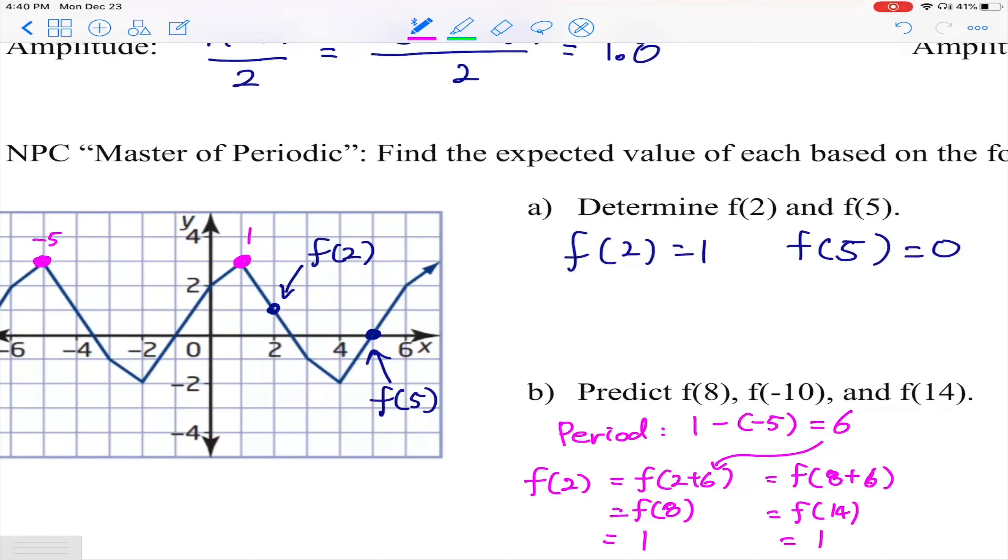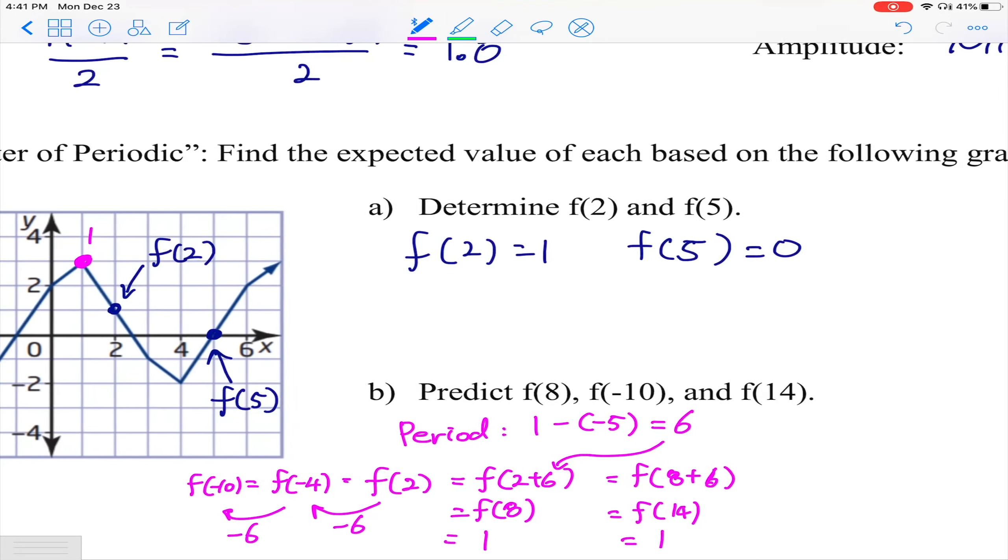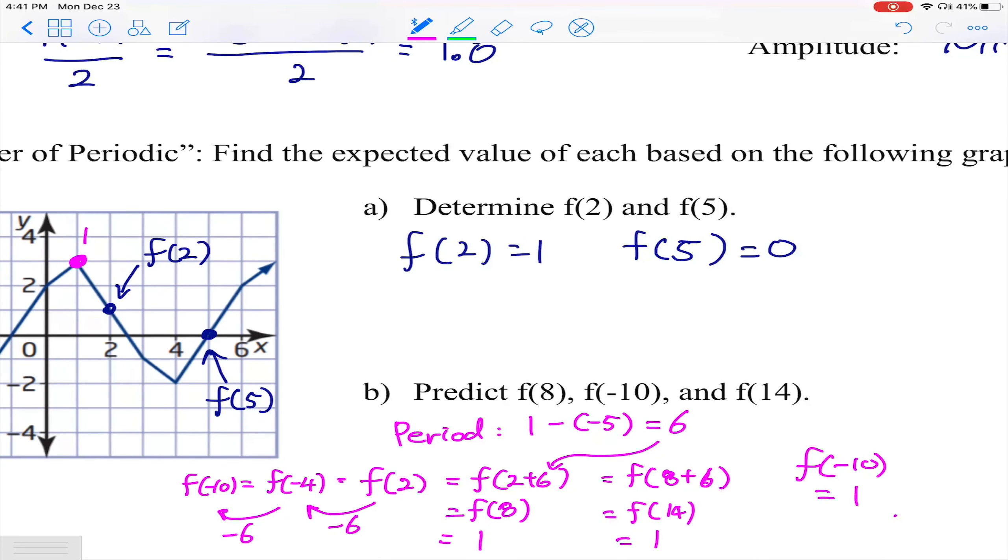Since we can go towards the right side, we can also go backward towards the left side. If one cycle goes from 2 to 8 in the right direction, we can also go to the other direction by subtracting 6 because you're going backwards. That basically becomes f(-4), and if you go one more time, it's going to be f(-10). Therefore f(-10) is also equal to f(2), therefore it is also 1.